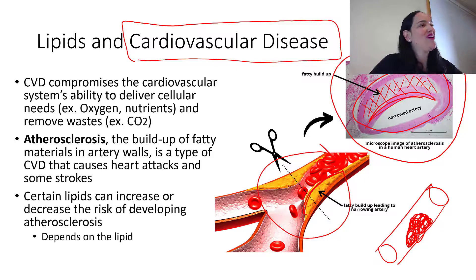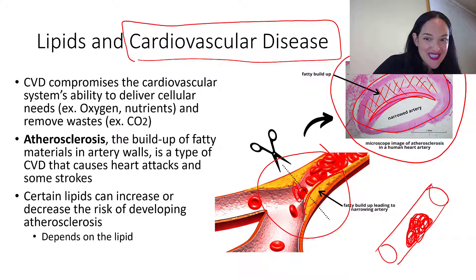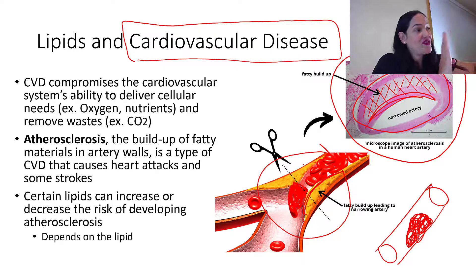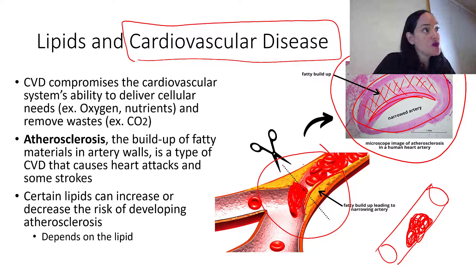These fatty substances are narrowing the lumen — the space that blood and all its important contents can flow through. Another big problem is that if we have a narrowed artery and then something like a blood clot gets stuck there, we have a complete blockage. When blood can't flow, oxygen and nutrients can't be delivered, and that leads to a heart attack or a stroke — a stroke in the brain, a heart attack in the heart.